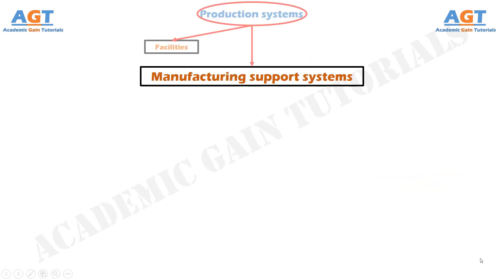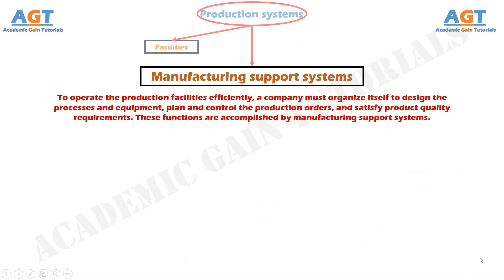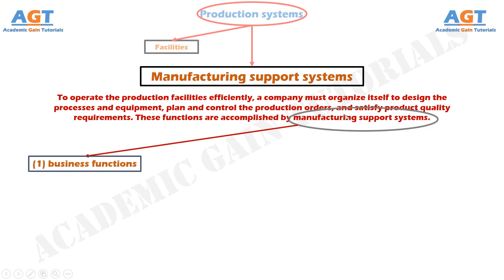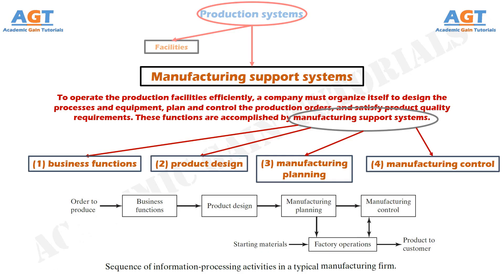To operate the production facilities efficiently, a company must organize itself to design the processes and equipment, plan and control production orders, and satisfy product quality requirements. These functions are accomplished by manufacturing support systems — people and procedures by which a company manages its production operations. Most support systems do not directly contact the product, but plan and control its progress through the factory. Manufacturing support involves a sequence of four functions: (1) business functions, (2) product design, (3) manufacturing planning, and (4) manufacturing control.